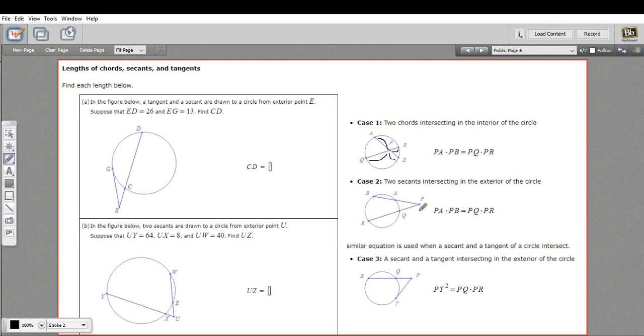Another case you can have is where you've got two secants that start from a common point. So they intersect out here in the exterior, and then they cross through the circle. In this case, it's a little bit different. We say PA, so this section, times PB, the whole length, is going to equal PQ, this exterior section, times the whole length.